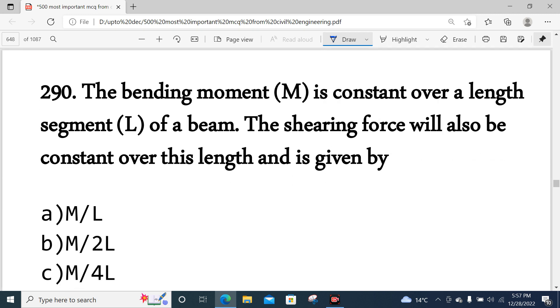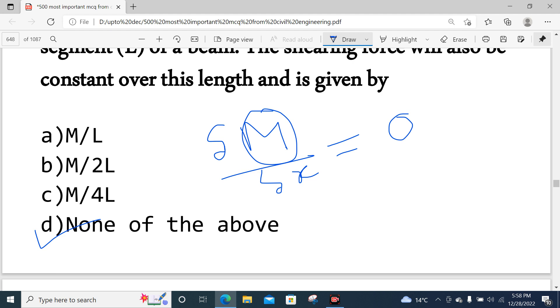Question number 290: If bending moment M is constant over length segment L, then the shearing force will also be constant over the length. If we differentiate the bending moment with respect to X, we get the shear force. But here bending moment is constant. If we differentiate constant, the shear force will be zero. Option D is correct.